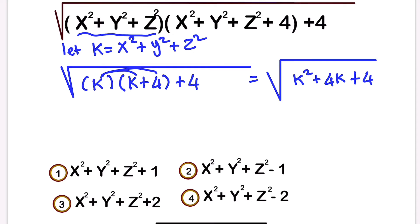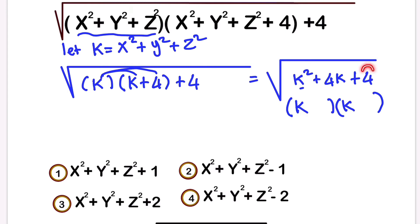So if we want to factorize this expression, we have k squared, which is k times k. We need two numbers that multiply to give four and add to give four — those numbers are plus two and plus two, because two times two is four and two plus two is four. So k plus two times k plus two is the same as k plus two squared.